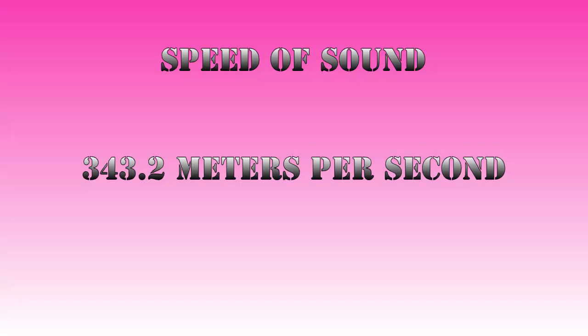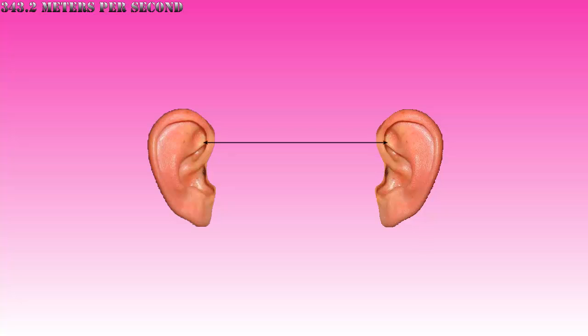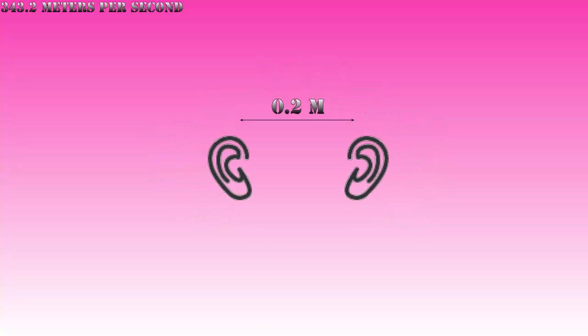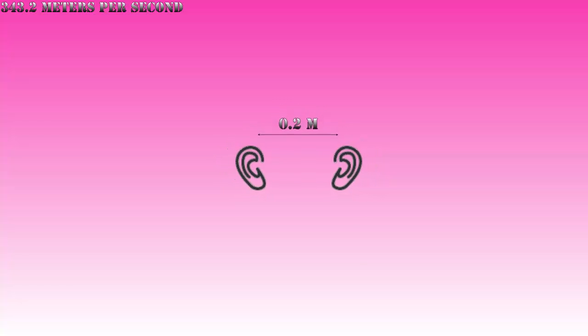So how does that work? Sound travels at 343.2 meters per second, assuming dry air at 20 degrees Celsius. The distance between your ears is about 20 centimeters or 0.2 meters. In a schematic setup, it will look like this: two auditory sensors at 0.2 meters from each other.